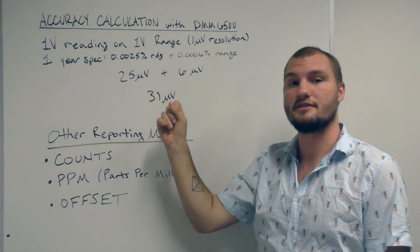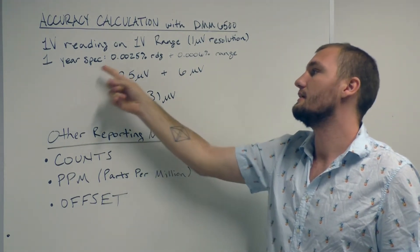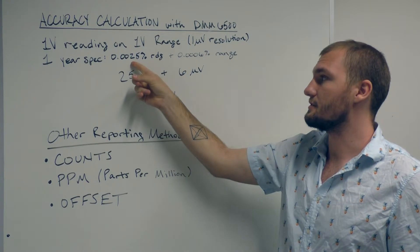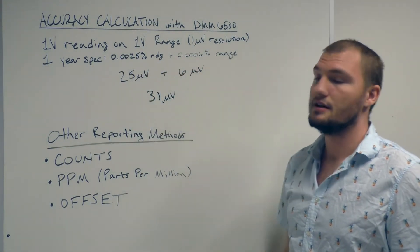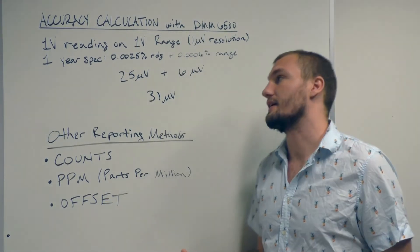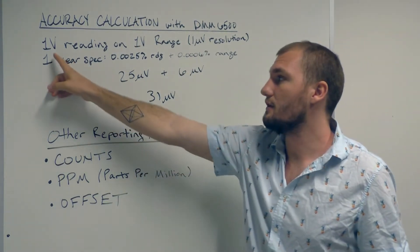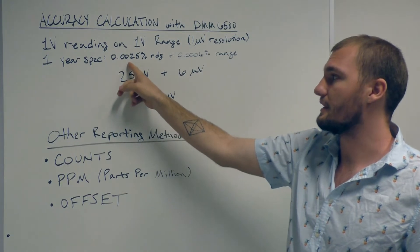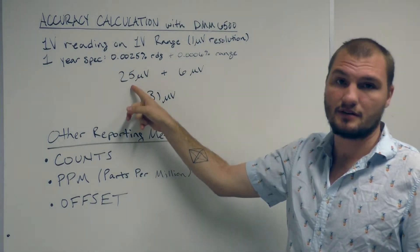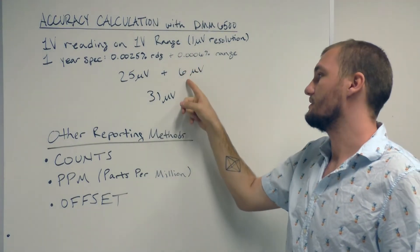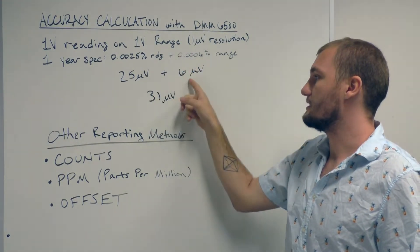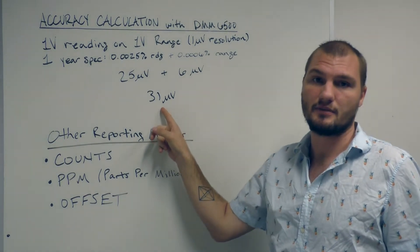Now the 1 year spec for this instrument, which you can find in the datasheet for this range, is .0025% of the reading plus .0006% of the range. So in order to find the accuracy of a 1 volt reading, what we're going to do is take the value of the reading and multiply it by the reading accuracy, which gives us 25 microvolts, and then we're going to take the value of the range and multiply it by the range accuracy, which gives us 6 microvolts. Adding those together gets us plus or minus 31 microvolts.